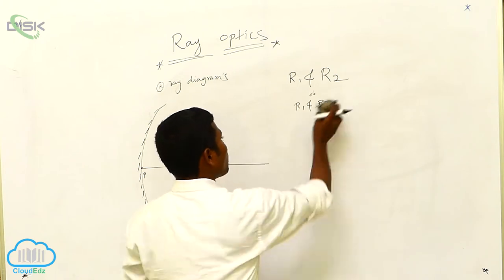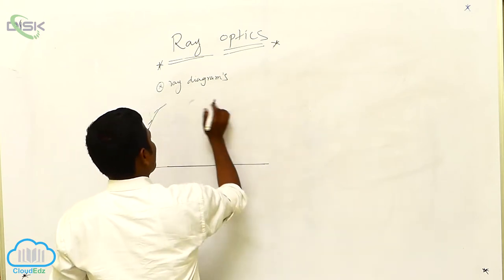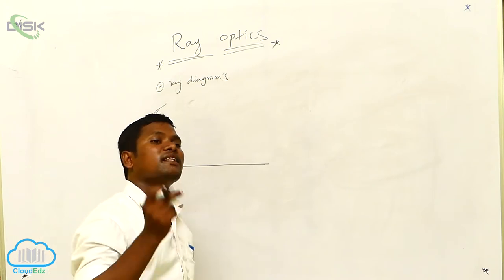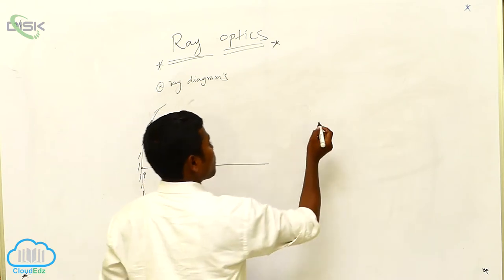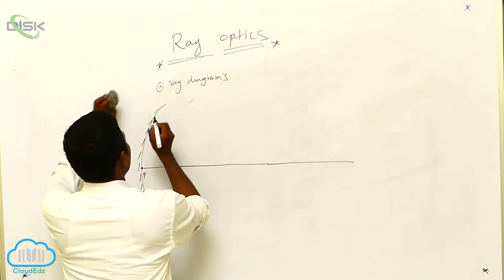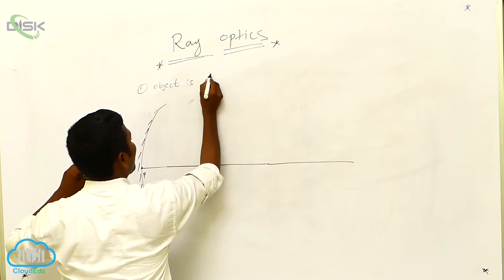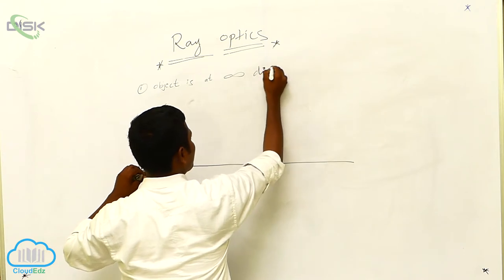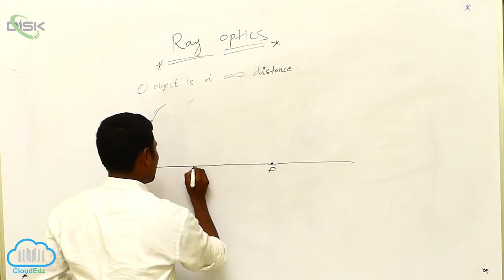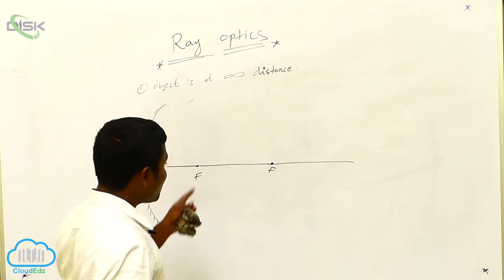The first case for ray diagrams: I am considering the object at infinite distance. When the object is there, only then will you get an image — the question is where you will get the image, in front of the mirror or behind it. The first case is: object is at infinite distance.